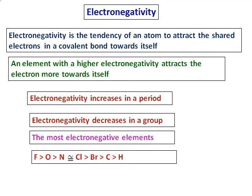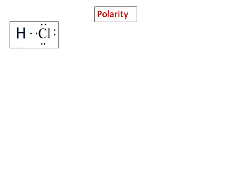Nitrogen and chlorine have almost equal electronegativity, but nitrogen comes before chlorine in the order. Then come bromine, carbon, and hydrogen. Knowing this electronegativity order will be useful when answering questions. After understanding electronegativity, let us see how it is related to polarity.